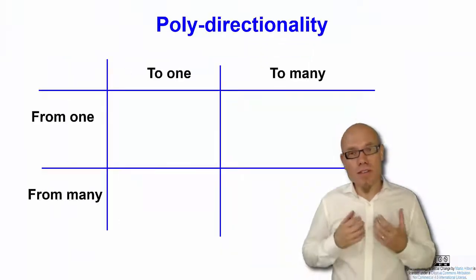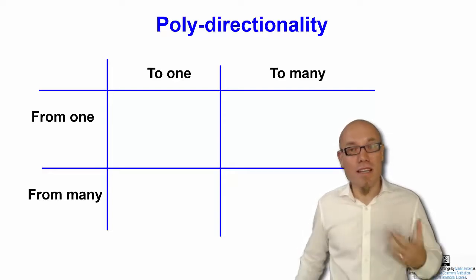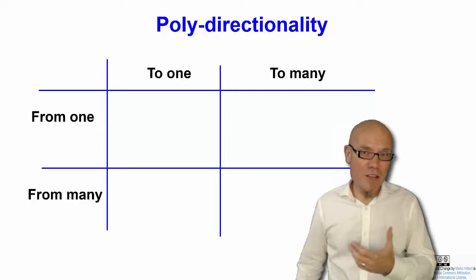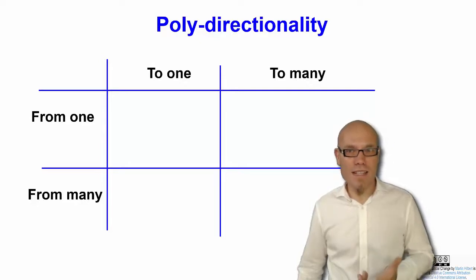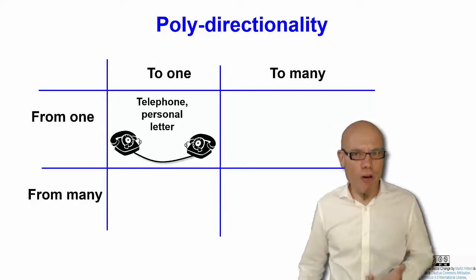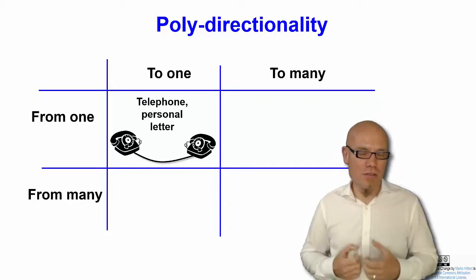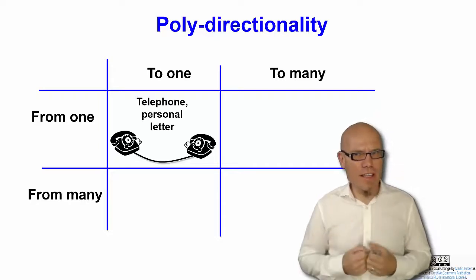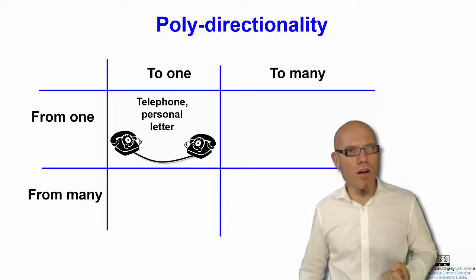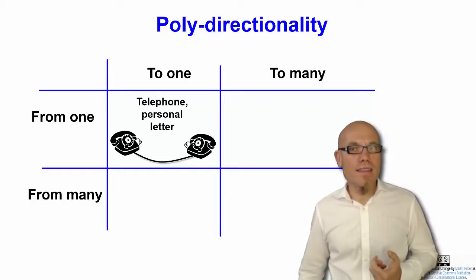Well, traditionally the communication happened either one-to-one, one-to-many, many-to-one, or many-to-many. For example, you had a phone conversation or a personal letter or a face-to-face conversation which you had one-to-one — so one person communicated to another person.